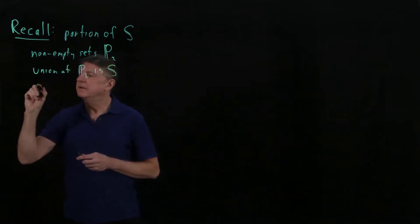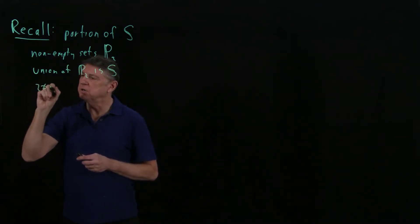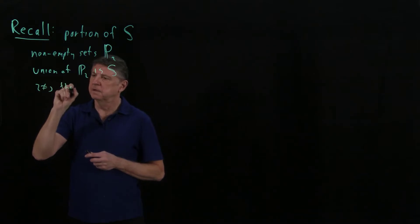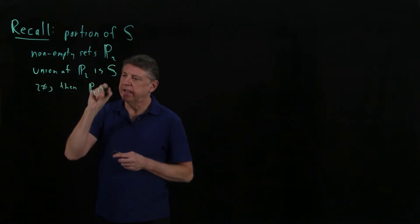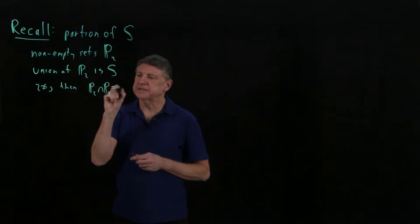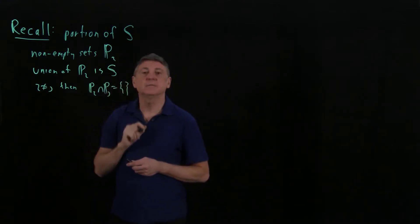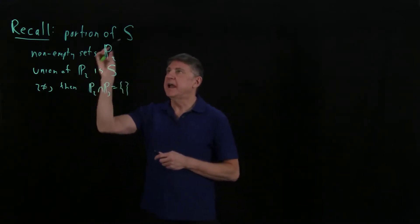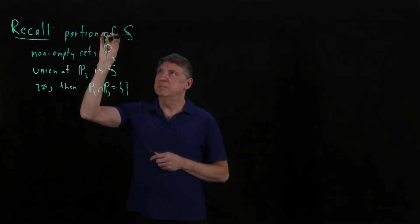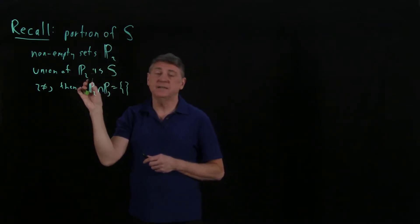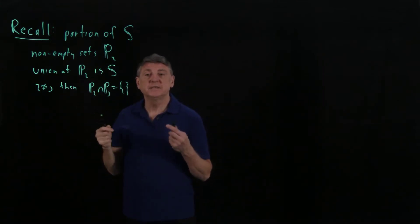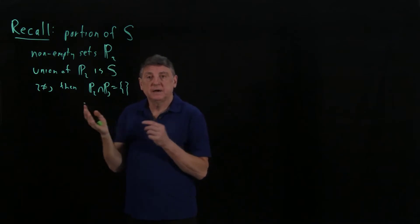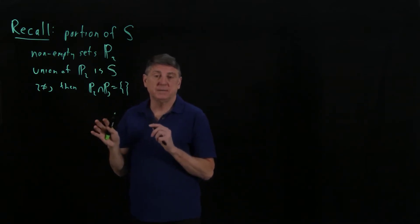And we'll say that if i is not equal to j, then if we take partition i and partition j, that their intersection is the empty set. Another way of saying this is that every member of the set S is in exactly one partition. So this is a way of breaking a set down into discrete non-empty pieces.